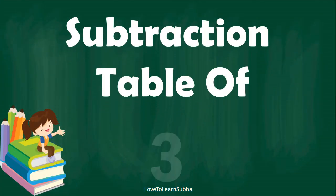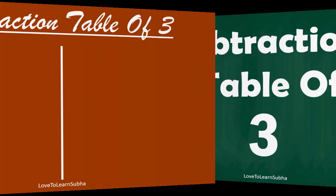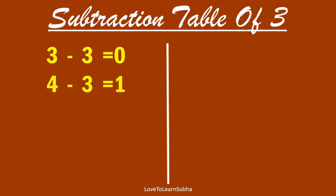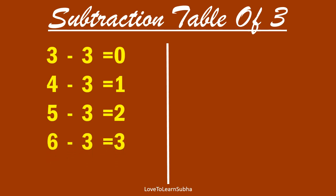Subtraction table of 3. 3 minus 3 equals 0. 4 minus 3 equals 1. 5 minus 3 equals 2. 6 minus 3 equals 3.